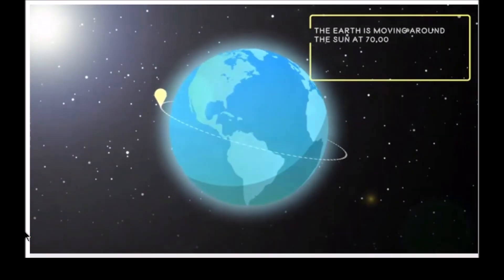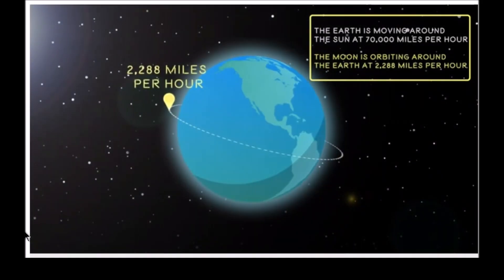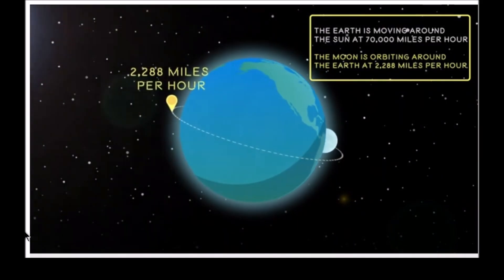The Earth is moving around the sun at 70,000 miles per hour, and the moon is orbiting the earth at 2,288 miles per hour.